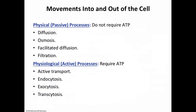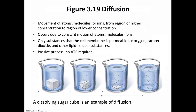Section 3.3 covers movements into and out of the cell. Passive transport requires no energy — examples include diffusion, osmosis, facilitated diffusion, and filtration. Active transport requires energy in the form of adenosine triphosphate — ATP. With active transport, substances move against the concentration gradient from a lower to higher concentration using energy, as opposed to passive transport, which moves along the concentration gradient from higher to lower without energy. Let's begin with diffusion.